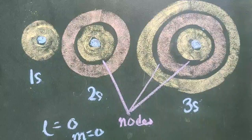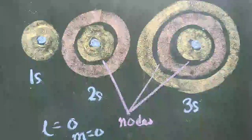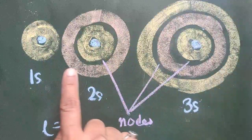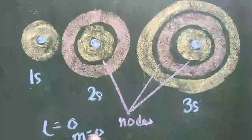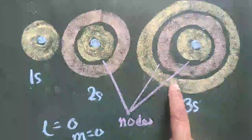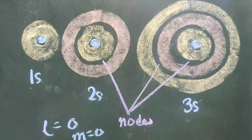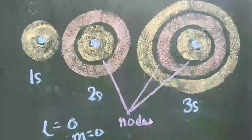All s orbitals — 1s, 2s, 3s — have a spherical shape. How do they differ? They differ in number of nodes: zero nodes, one node, and two nodes respectively. They also differ in size: 2s is bigger than 1s and 3s is bigger than 2s. As the principal quantum number increases, both the size and the energy of the s orbital also increase. Now let us see the shapes of the p orbital.